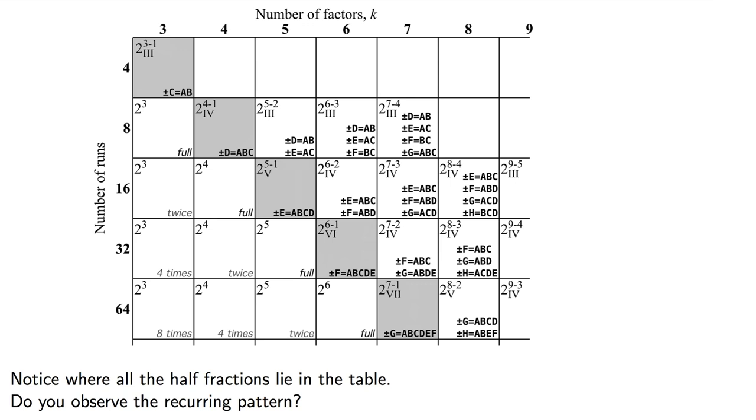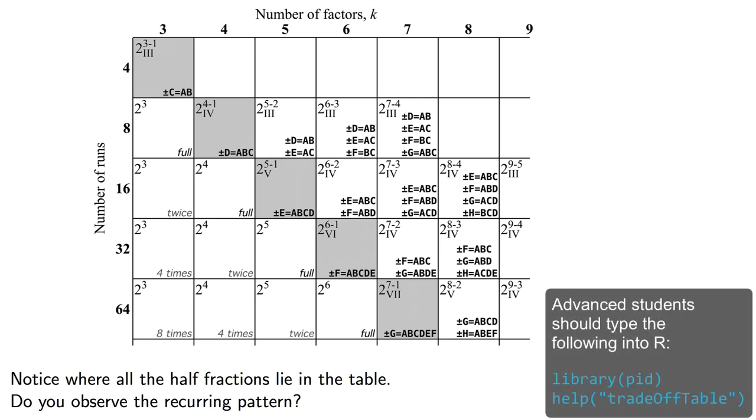Now back to that tradeoff table. You might be curious about the other entries and how they were found. Those entries here are found so that you can minimize the confounding and recover the most amount of information for a given row and column combination in the table.